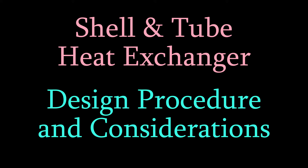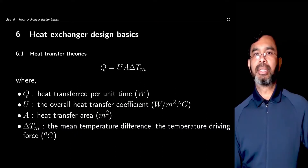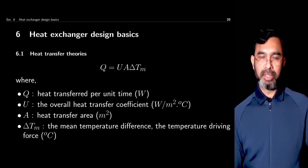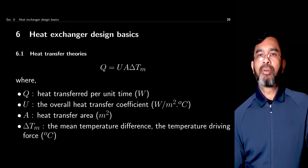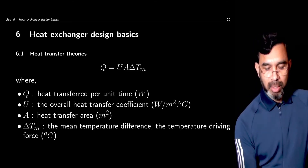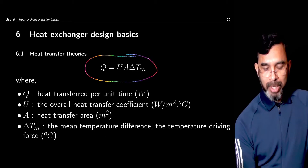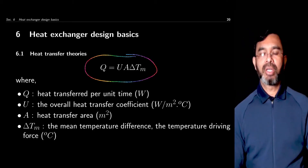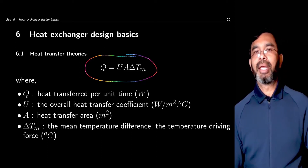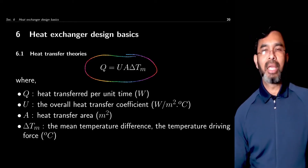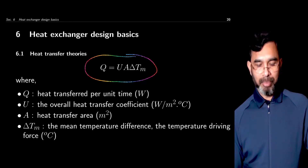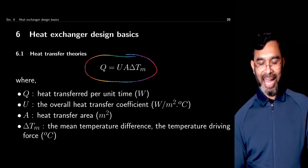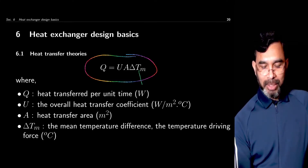In this session, we talk about some design aspects of heat exchangers, focusing mainly on the Shell and Tube heat exchanger. For all heat exchanger design, the basics of heat transfer remain the same. The main equation, Q equals U A delta T, is always applicable. Here Q is the heat transfer between the two fluids, U is the overall heat transfer coefficient, A is the heat transfer area, and delta T is the temperature difference.